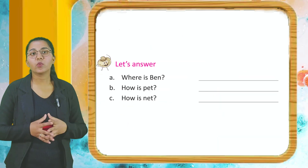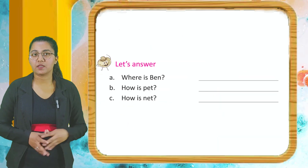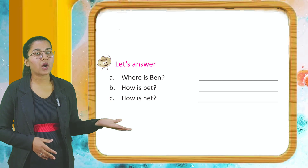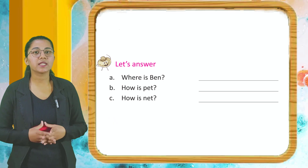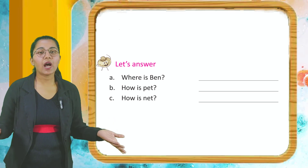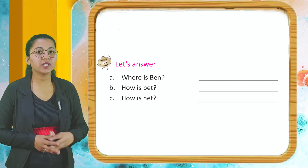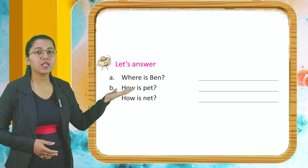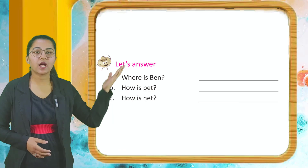Now let's answer. A: Where is Ben? B: How is pet? C: How is net? Students, you have to write the answers in the columns along with the question.